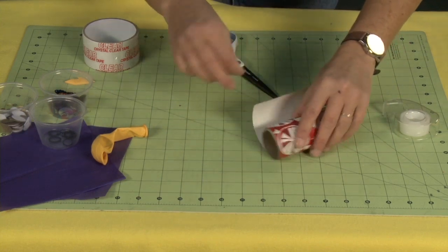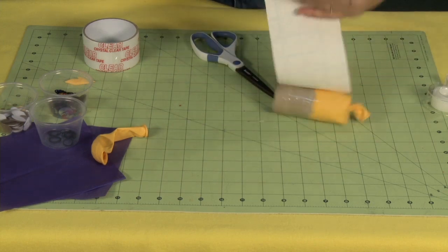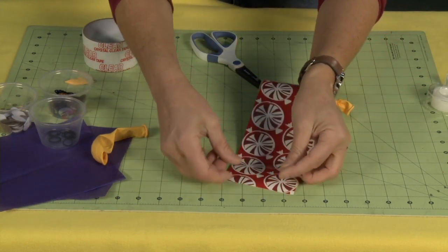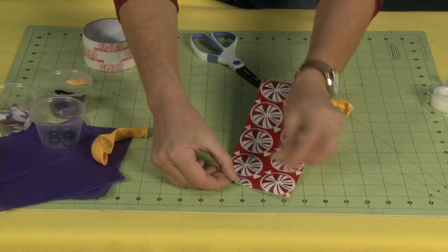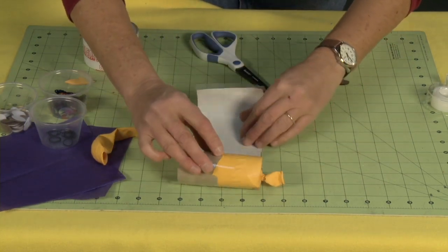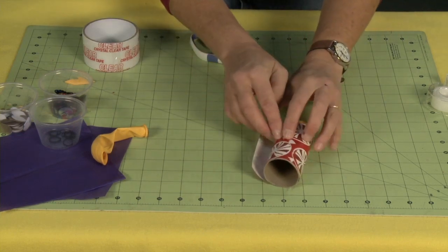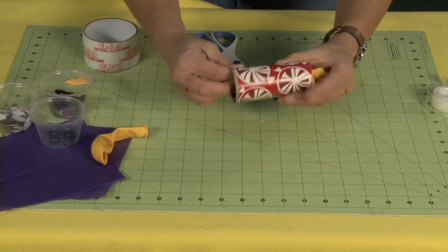And then what I found is easiest is to take my tape, get it set, put it on the outside edge of my paper so that I can just wrap my tube and it'll just stick right there, like that.